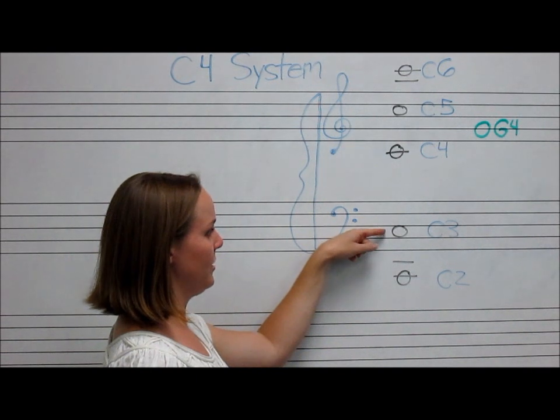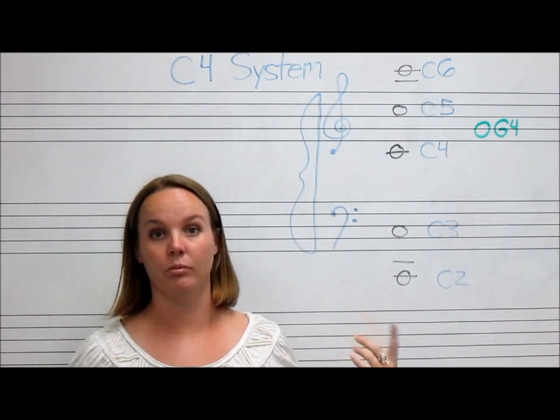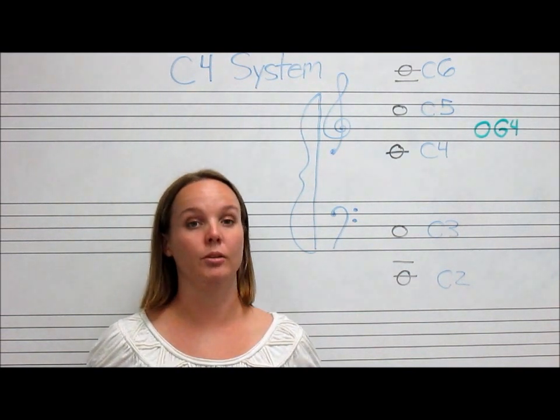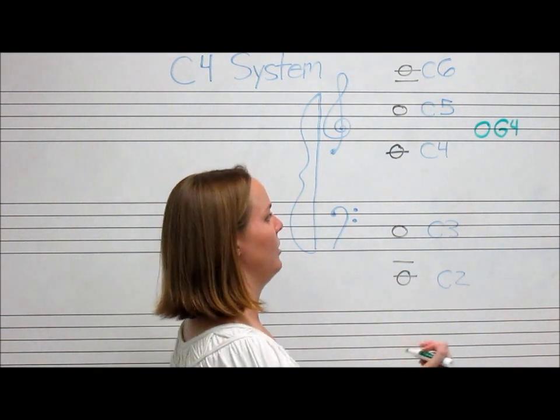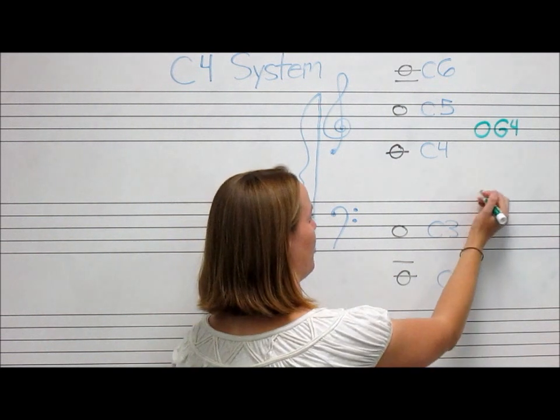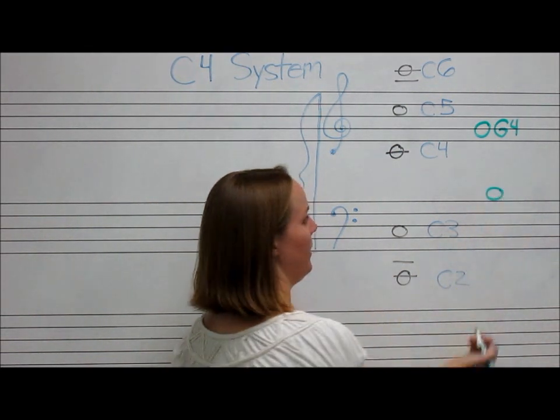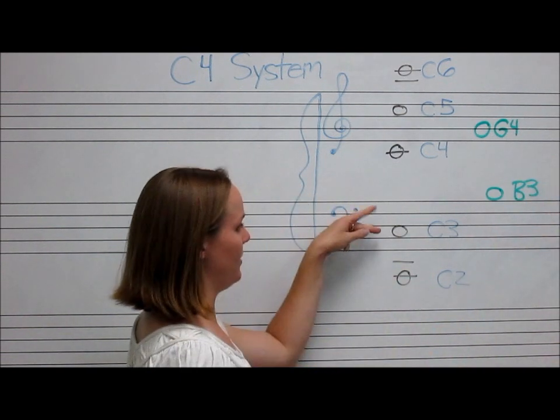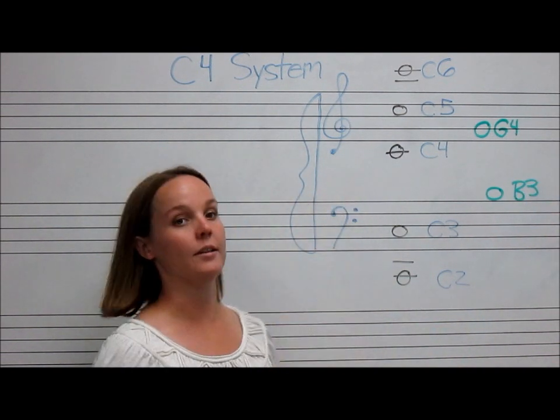All of the notes in between C3 and C4 will be the letter name plus the number 3. For example, if I asked you to draw B below middle C and label it, you would draw B, and it would be labeled B3, because it falls in between C3 and C4.